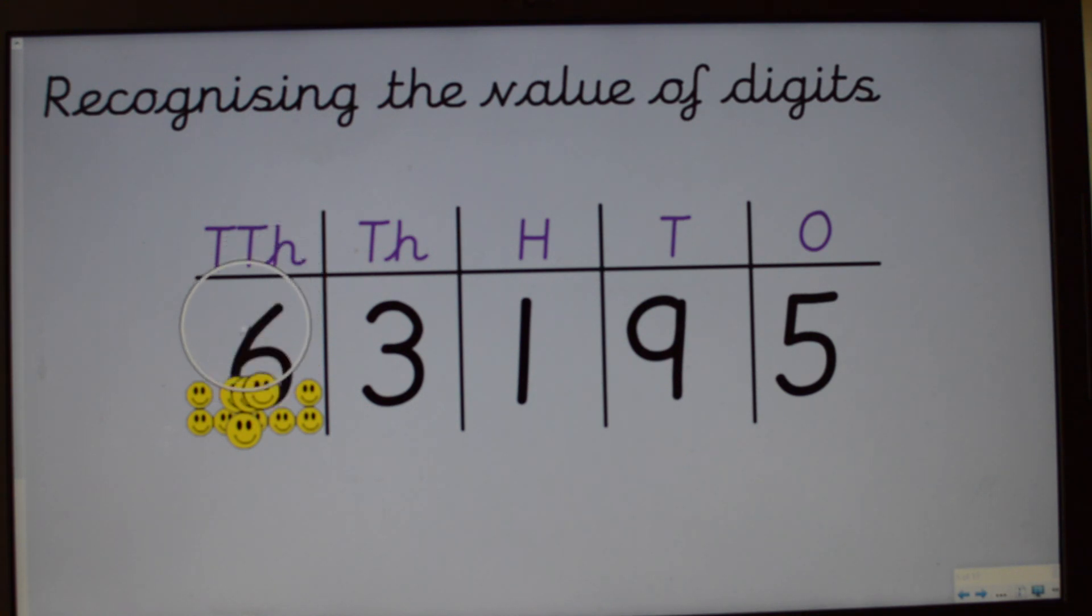Right, now time for the big number. A six. So all together, we have made the number sixty-three thousand, one hundred and ninety-five. Quite often, you'll see a comma separating the thousands off. So it'll make it nice and clear that it was sixty-three thousand, one hundred and ninety-five.